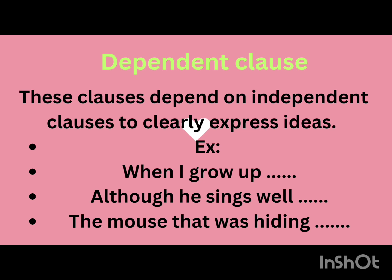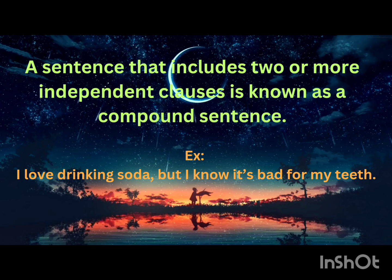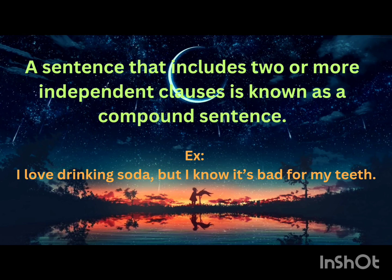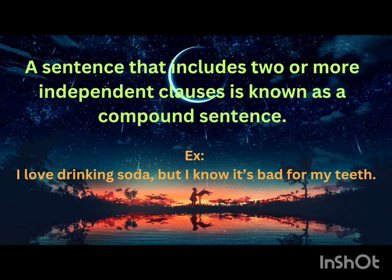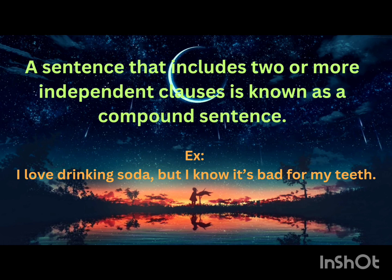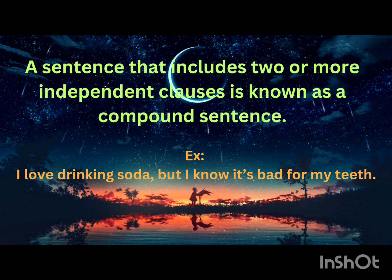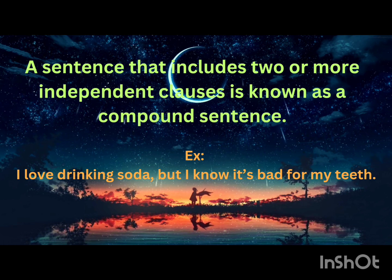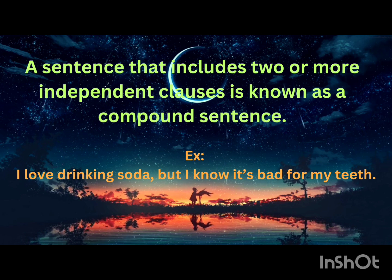Dependent clause: these clauses depend on independent clauses to clearly express ideas. Examples: 'when I grow up,' 'although he sings well,' 'the mouse that was hiding.' These parts of a sentence require independent clauses. A sentence that includes two or more independent clauses is known as a compound sentence. For example, 'I love drinking soda but I know it's bad for my teeth.'